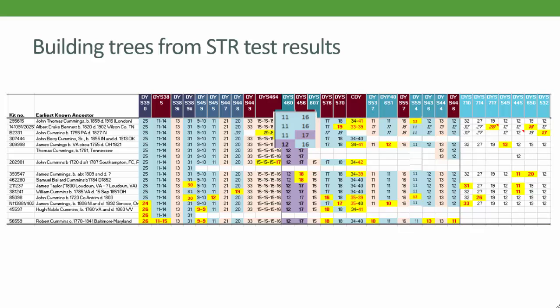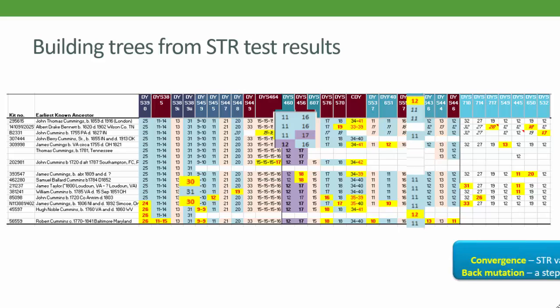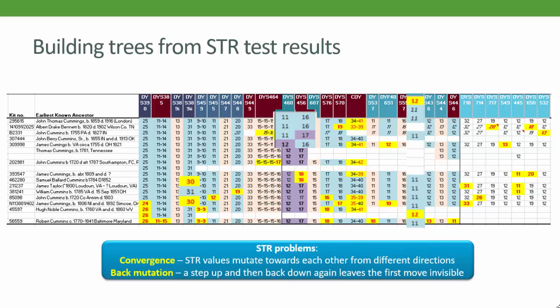But which one is it? The two thirties on the left here are another likely case, and these two twelves certainly appeared at different times. This is sometimes called convergence, or the same STR value appearing at different times or from different directions. So here is one of the big dilemmas in using STRs: how far can we use seemingly similar mutations to build branches in our lineage tree, or how can we spot parallel mutations or convergence?